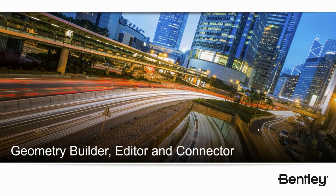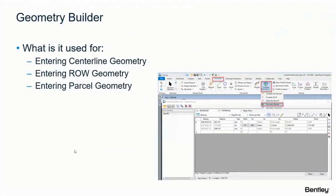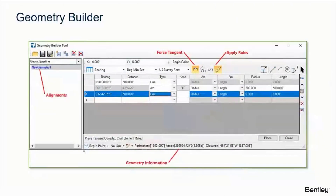Good morning, good afternoon, good evening. What we're going to cover today is the Geometry Builder, the Geometry Builder Edit, and the Geometry Connector. We're going to go through and look at each one of these and cover any tips or tricks as we go. The first thing I want to cover is the Geometry Builder — it's located on the Geometry tab underneath the Horizontal group, underneath the Complex Geometry pulldown. When you go into it, you'll see a dialog box that has the ability to enter data. You can use it for entering any type of horizontal geometry: centerline geometry, right-of-way geometry, parcel geometry, or any type of geometry you'd like. You can apply rules, keep tangency, insert objects, and move objects around.